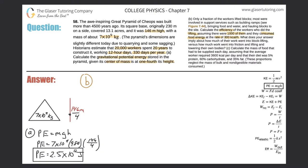We need to calculate the efficiency of the workers. The efficiency formula says that efficiency is equal to the work put out — the useful output of work — divided by the energy put in to perform that useful output of work. In this problem, the energy in is generally the total energy metabolized by the person, and their useful output in terms of work is definitely less than the amount they're actually metabolizing inside their body.